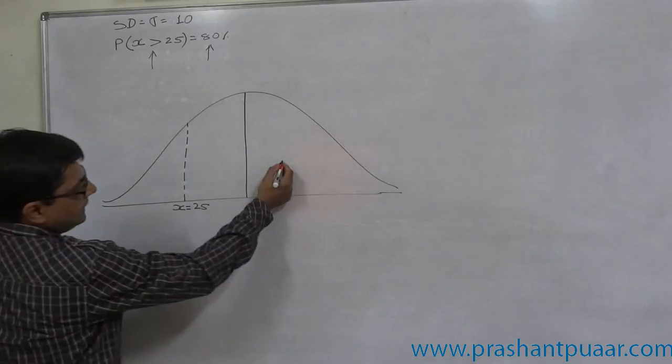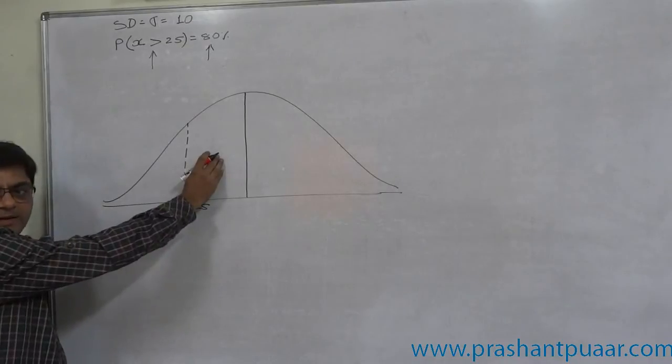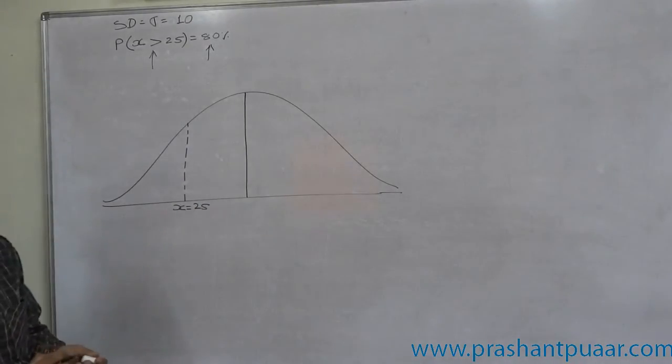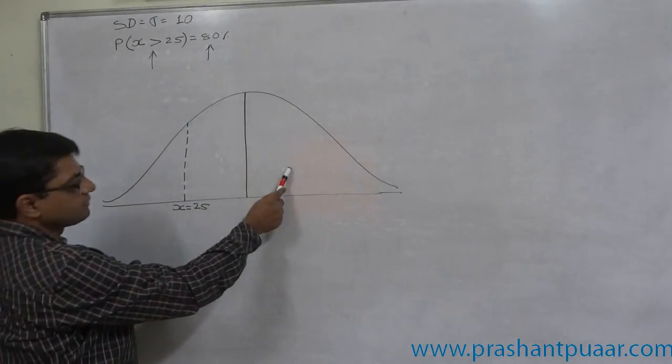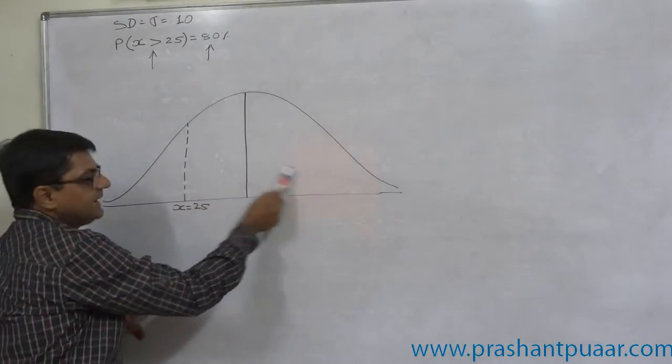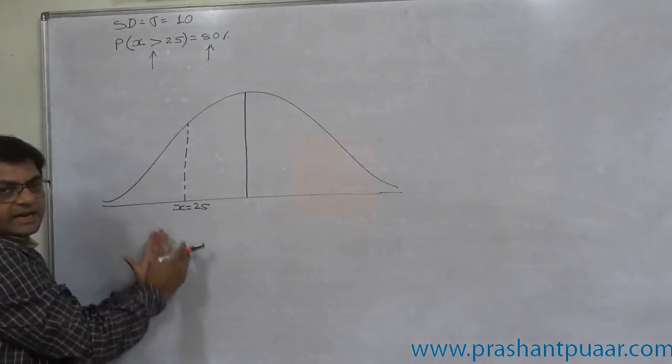This total area is 0.5. So some area out of the left-hand side should also be there, equivalent to 0.3. Then only 0.3 plus 0.5, 0.8. That means 80% area can be for the values greater than 25.